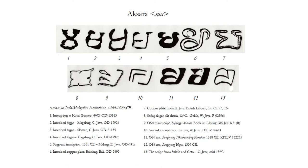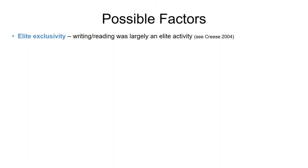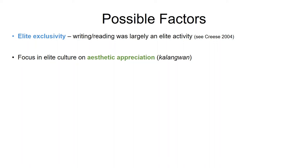So how can we account for this diversity? There's a possibility of elite exclusivity — developing a unique writing system as a good way of keeping the plebs out. But we don't actually know whether reading and writing were elite activities in medieval Java. There was a focus in elite culture on aesthetic appreciation of a very particular kind. There's also the possibility of social isolation influencing the development of these scripts, since it is such a mountainous place that different communities could be cut off from one another. But there's quite a lot of evidence for people moving around Java quite a lot over the medieval period, so I'm not convinced this is the main reason.